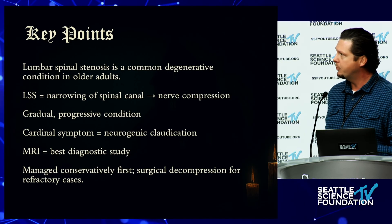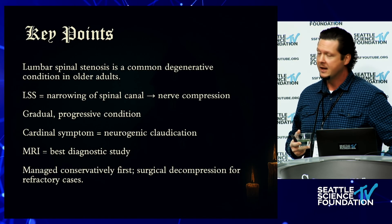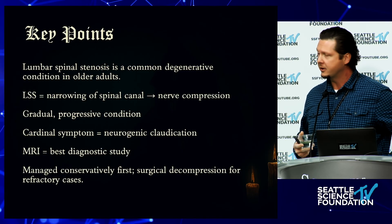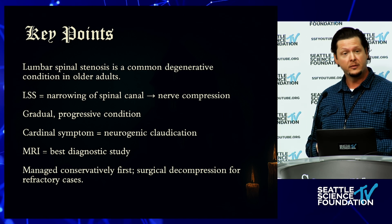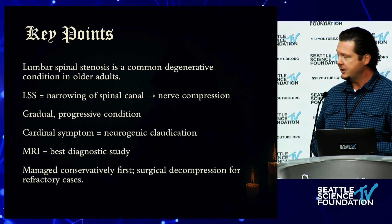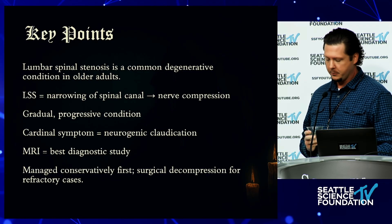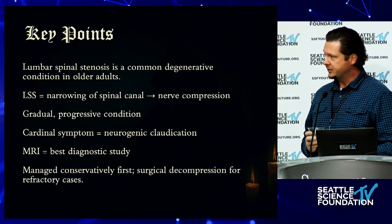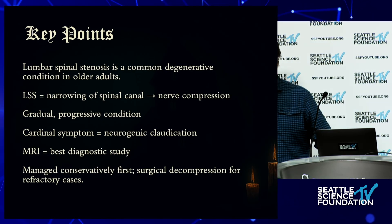Key points: lumbar spinal stenosis is a very common degenerative condition in older adults, defined by cross-sectional narrowing of the spinal canal and subsequent nerve compression. It is a gradual, progressive condition; the cardinal symptom is neurogenic claudication. MRI is the best diagnostic study, and it is managed conservatively, with surgical decompression for refractory cases.